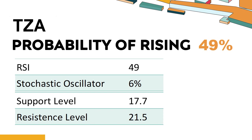How has TZA performed according to technical data? Technical Signals and Analysis: TZA's 14-Day Relative Strength Index (RSI) value was 49. When the RSI is above 25 and below 50, it generally indicates that the stock is moderately bearish. This means that the security's price has been falling but has not yet reached oversold levels, typically considered an RSI reading of 25 or lower.